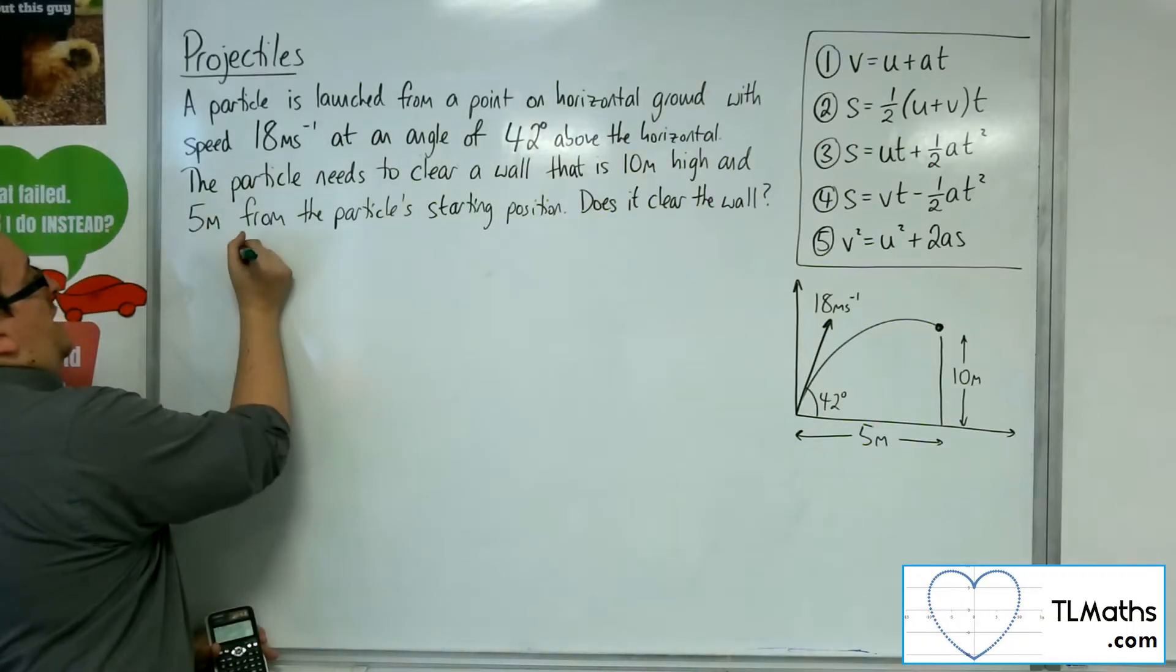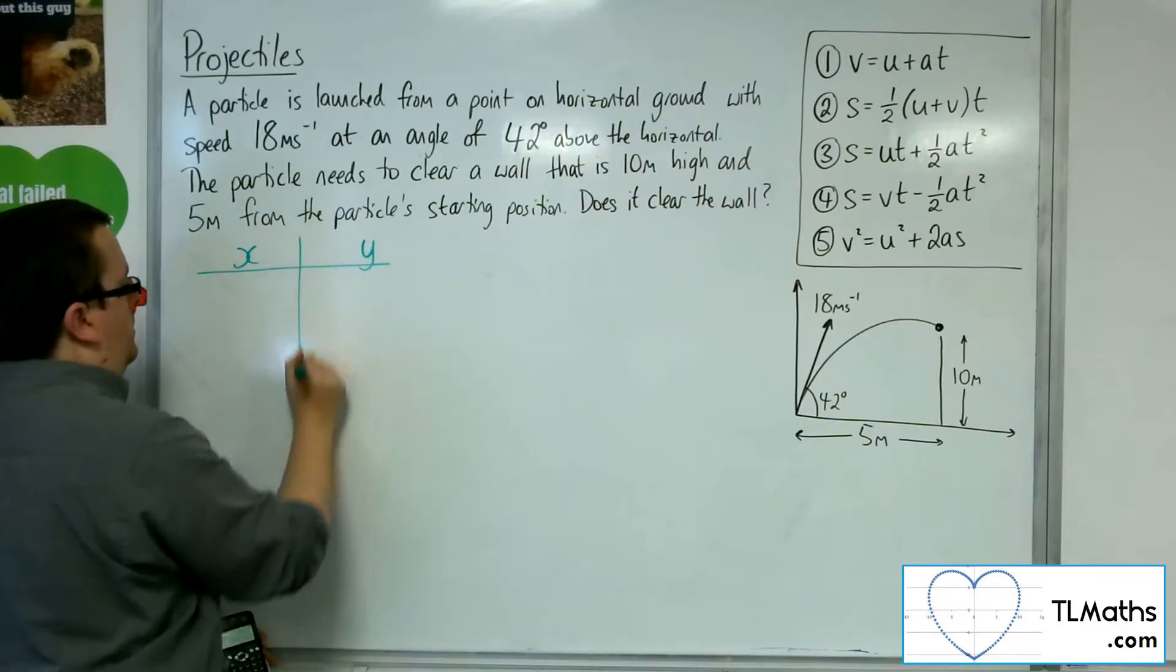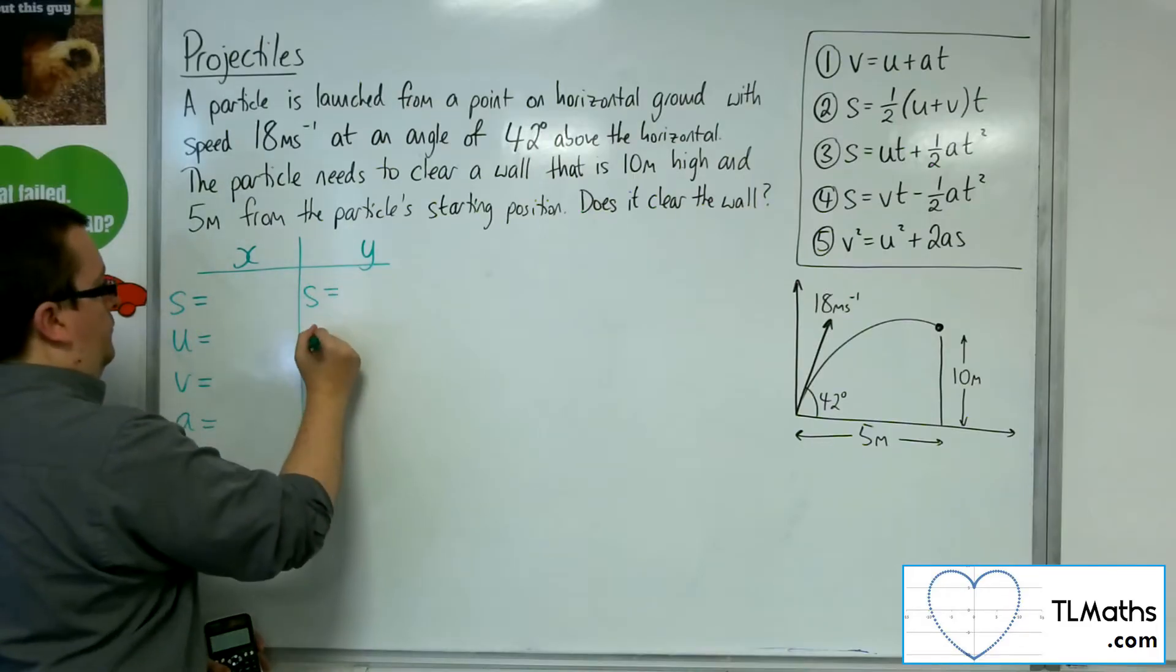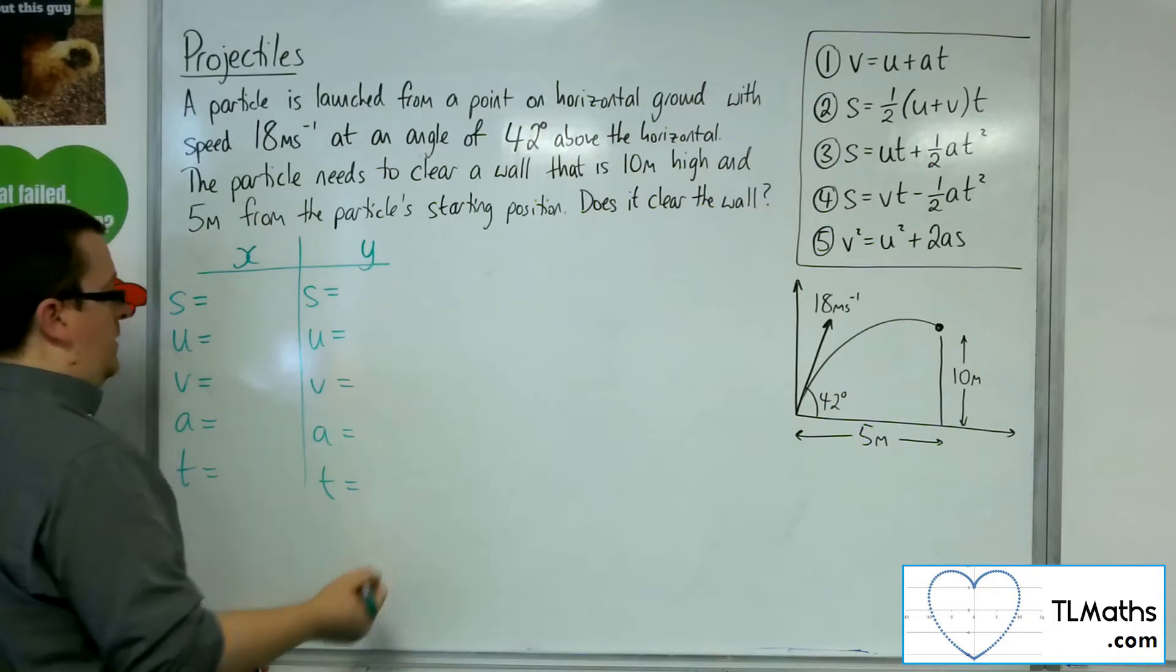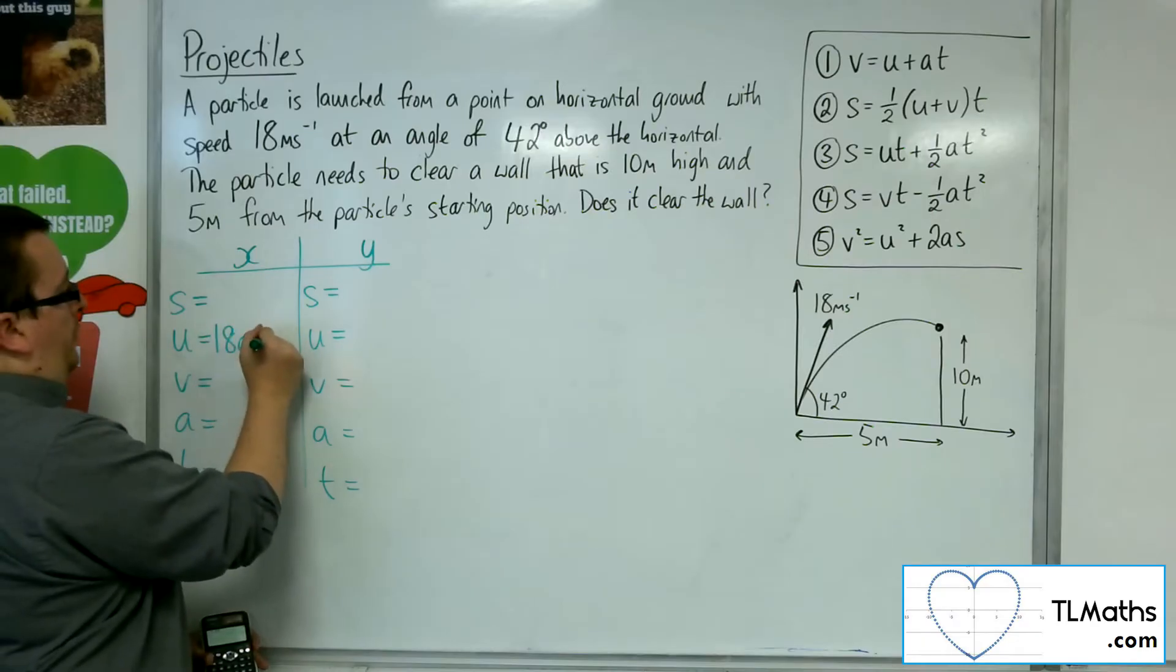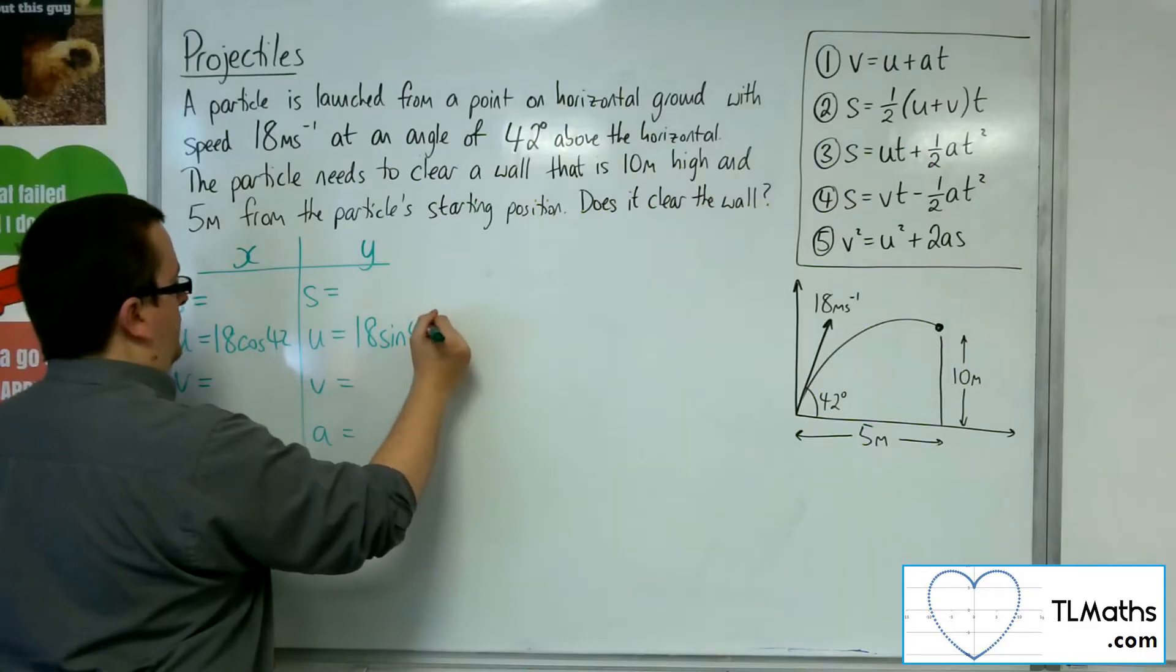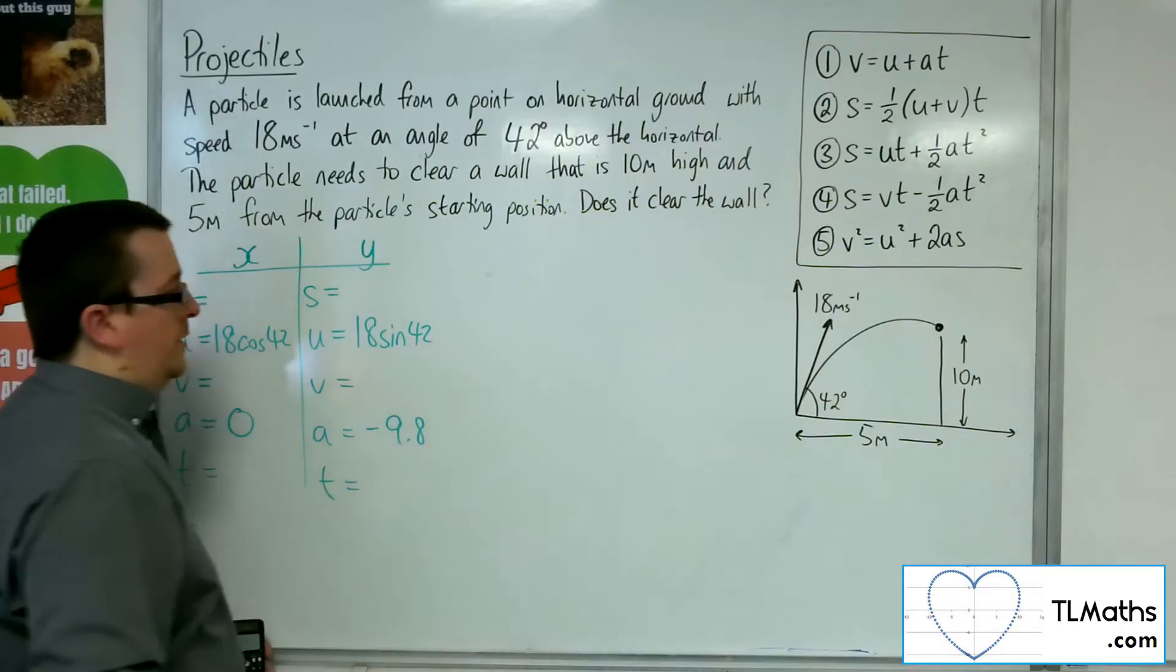So I'm going to set up the horizontal and vertical components for the SUVAT. The initial velocity is 18 cos 42, and the initial velocity for the vertical component is 18 sin 42. The acceleration is 0 and minus 9.8.